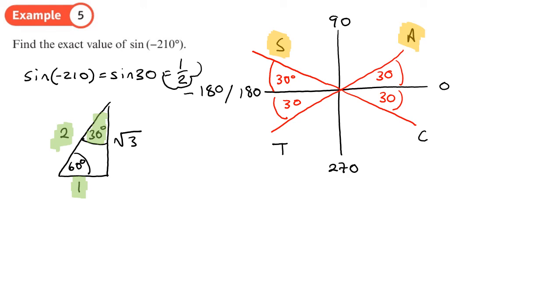So all without a calculator. You should now be able to do exercise 10B on page 209. So remember your CAST diagram and then two triangles like this.